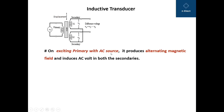On exciting the primary with an AC source, it produces an alternating magnetic field. The alternating current flows through the primary, creating an alternating magnetic field, and the magnetic flux from the primary links with both S1 and S2, inducing an AC voltage in each of the secondaries.